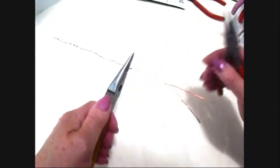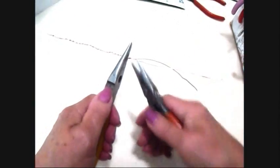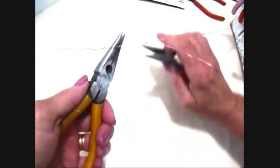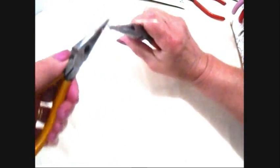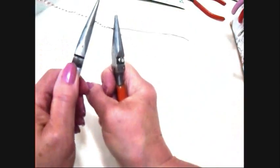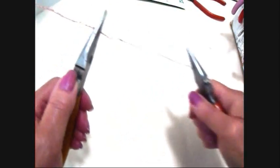And if you have trouble twisting with just your hands, you can hold the wires with one set of pliers and then twist with another set. So just go ahead and twist the entire length.